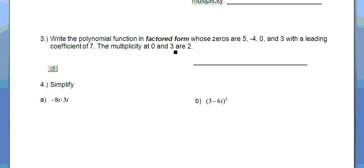Number 3 asks me to write a polynomial function in factored form. Zeros are 5, negative 4, 0, and 3. A leading coefficient of 7, and multiplicity at 2 of the zeros 0 and 3 are 2.